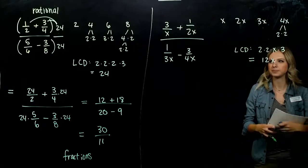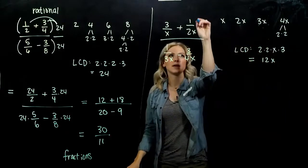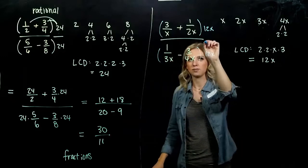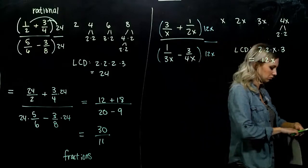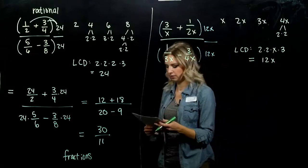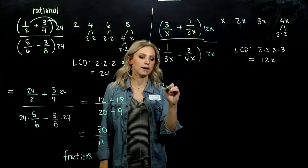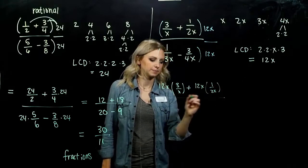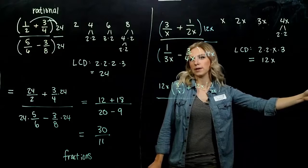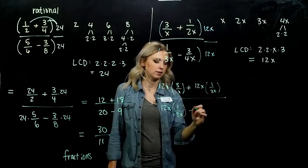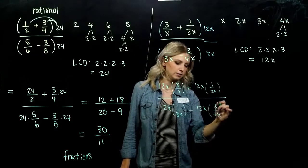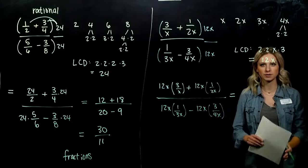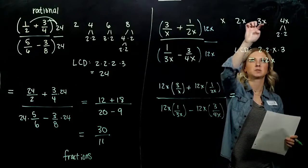We multiply every single term by 12x — everything up top multiplied by 12x, everything down below multiplied by 12x. Dividing the same thing over the same thing is 1, just changing what it looks like. Distributing: we get 12x times 3/x, plus 12x times 1/(2x) on top, and 12x times 1/(3x) minus 12x times 3/(4x) on the bottom.